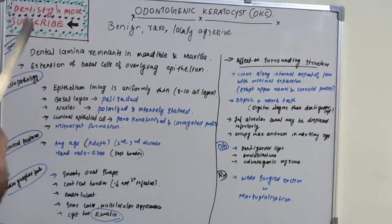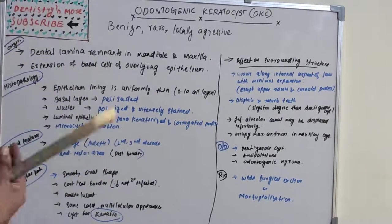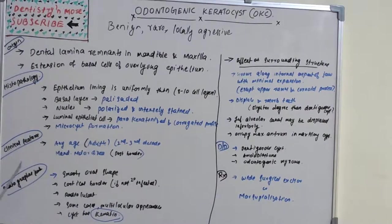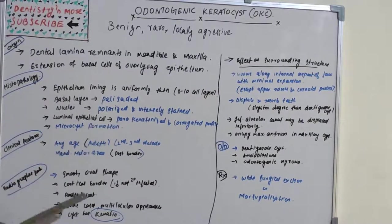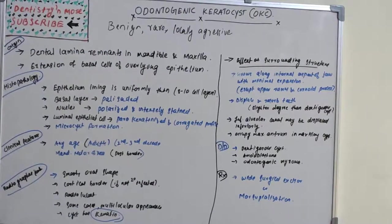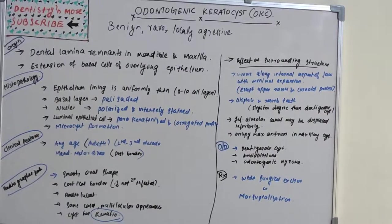So odontogenic keratocyst is a benign, rare cyst which is locally aggressive, seen most commonly in the posterior mandibular area, and which has keratin deposits in the cyst. That's all about OKC — I'll come up with a new topic in oral pathology. Thank you.